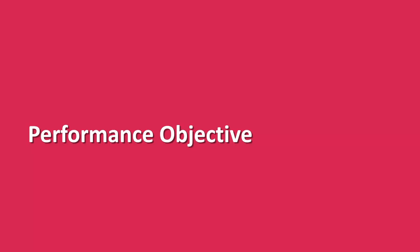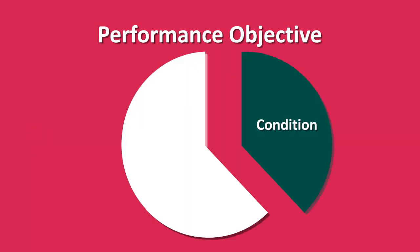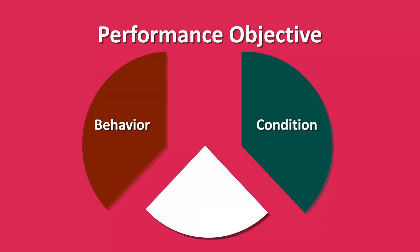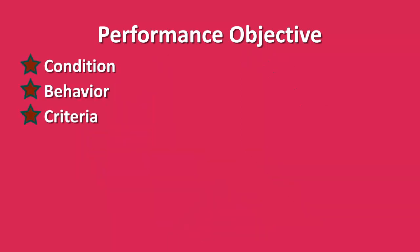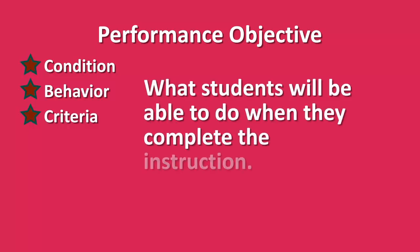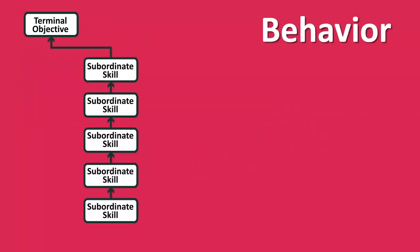What are the parts of a performance objective? There are three parts: a condition, a behavior, and criteria. These three parts should be present in any well-written performance objective. Remember, a performance objective clearly defines what students will be able to do when they complete the instruction. During the analysis phase, you've identified the subordinate skills along the way to your goal — these are behaviors.